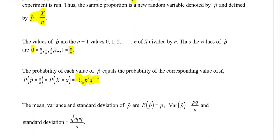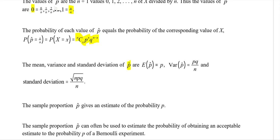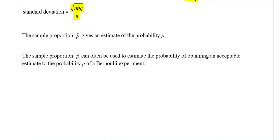The mean and variance and standard deviation of the sample proportion are calculated differently — don't get these mixed up with the ones from previous lessons. The expected value (mean) of p-hat is simply equal to p. The variance is pq over n, which means the standard deviation is the square root of pq over n. These two expressions for standard deviation both work out to the same thing. The sample proportion gives an estimate of the probability p.